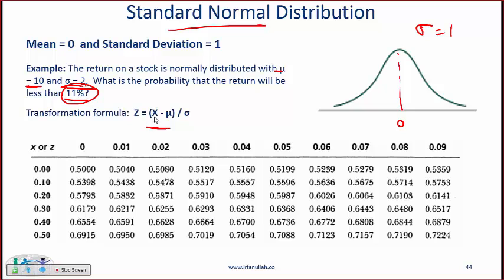And how do you do that? So the x is the 11 minus mu is 10. 10 and then so you have 11 minus 10 divided by 2. So 1 over 2 which is 0.5.